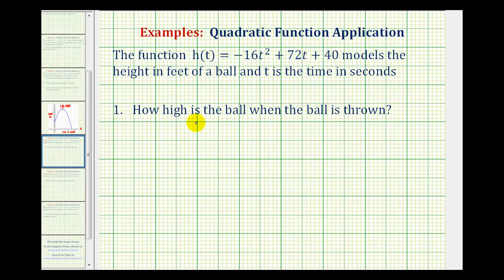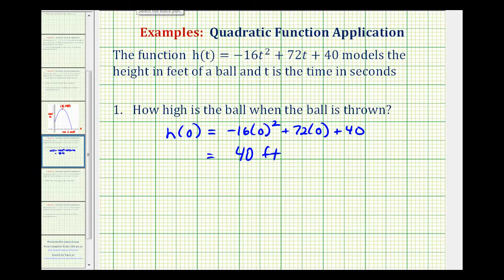First, to determine how high the ball is when the ball is thrown, at the instant the ball is thrown is when the time starts. So if we set t equal to zero, we can find the initial height. So if t equals zero, h(0) would be the initial height, which would be -16(0)² + 72(0) + 40, which we can see would just be 0 + 0 + 40, or 40 feet. Which again, we saw from the graph, the initial height was 40 feet.